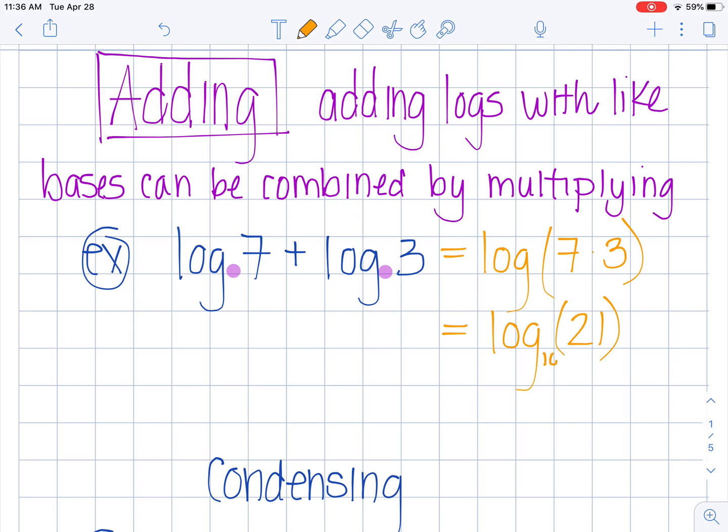We just leave our final answer like that because we cannot simplify this anymore. 10, because this is a log base 10, to the what power is equal to 21? We don't know that off the top of our head. So when I have two bases that are the same I'm just going to multiply these numbers, and sometimes they're letters. And that is called condensing with addition.